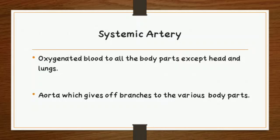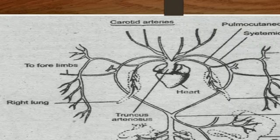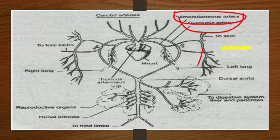In this diagram, you can see the carotid arteries, which supply oxygenated blood to the head region, including the brain, tongue, head muscles, eyes, and ears. Then we have the pulmocutaneous artery, which contains deoxygenated blood and supplies blood to the lungs and skin for oxygenation.